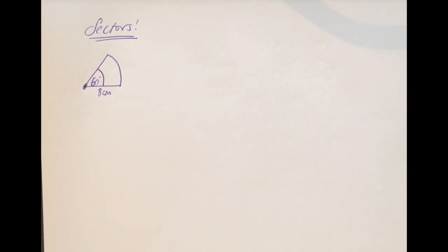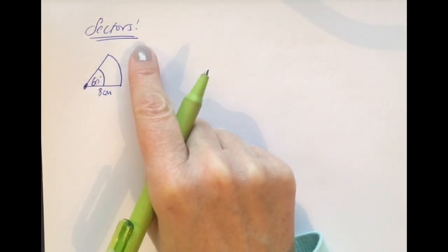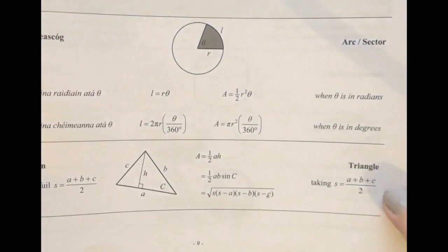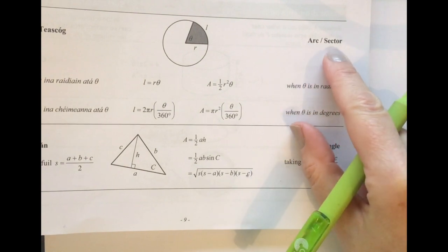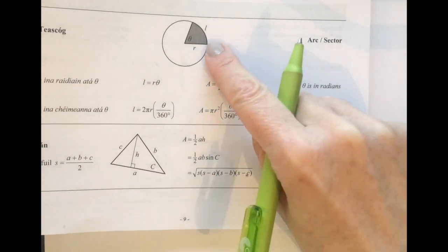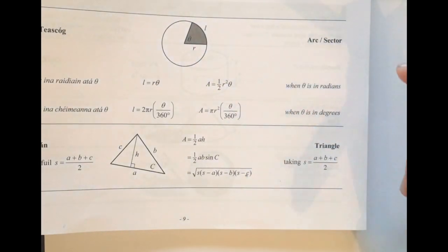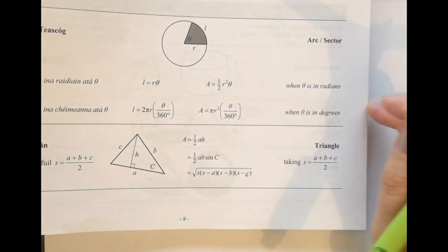Okay, so finally we're going to look at sectors. So this is like a pizza slice. So again, we have formulas in our log tables. So if you go to page nine, you can see here we're talking about an arc or a sector.